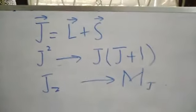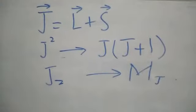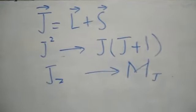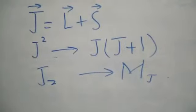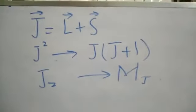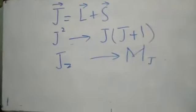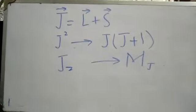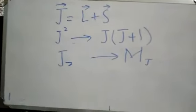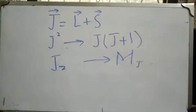We also know that total angular momentum is the sum of the orbital part and the spin part. J squared operator gives us J into J plus 1 value, but Jz operator gives us Mj value.